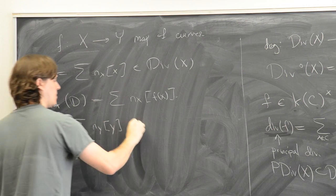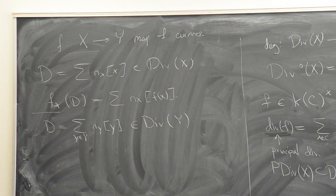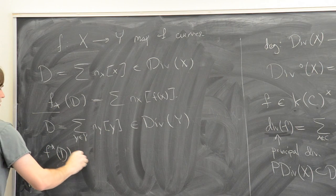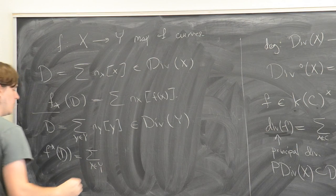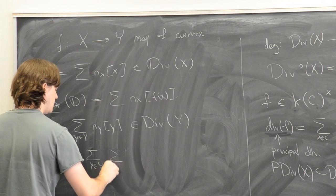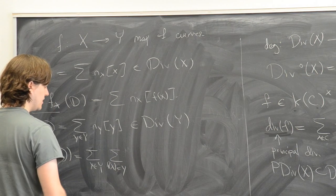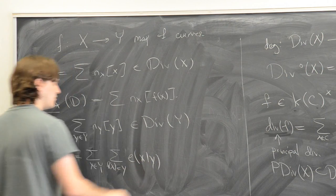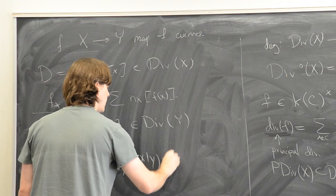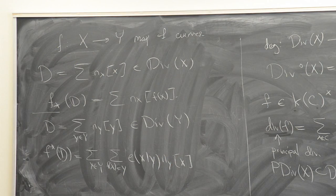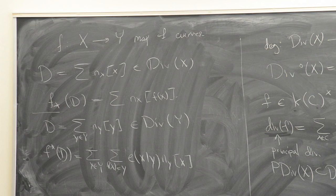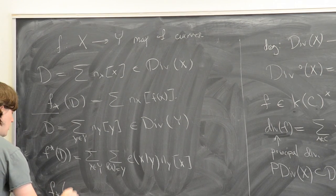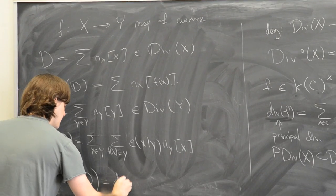The pullback is defined by summing over the points of Y and over the pre-images of each point, weighted by the ramification index e(x/y) times n_y for x. If you think of x lying over y, you're taking the entire fiber above a point in the support of the divisor and weighting by ramification. Because of this weighting, if you pull back and then push forward, it's just multiplication by the degree — that's why you put in the ramification indices. So f_*(f*D) equals deg(f) times D.